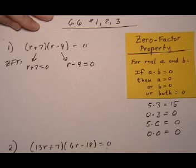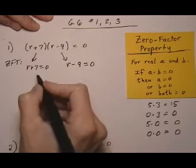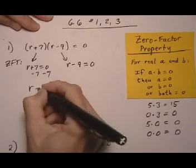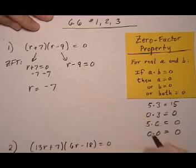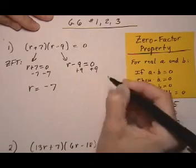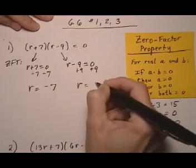And then we just solve the equation for the R value that makes it true. For the first one, let's take away seven on both sides. So we get R equals minus seven. And for this one, we add nine to both sides. And we get R equals nine.